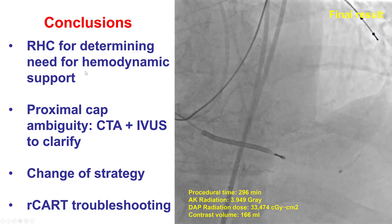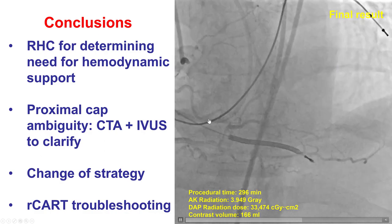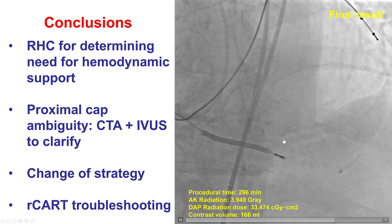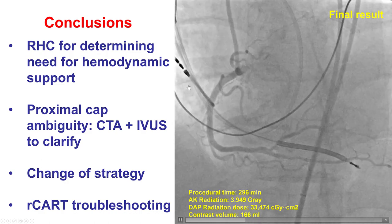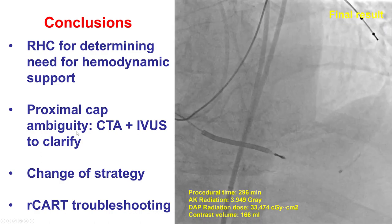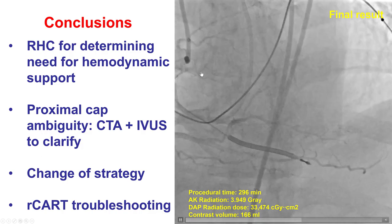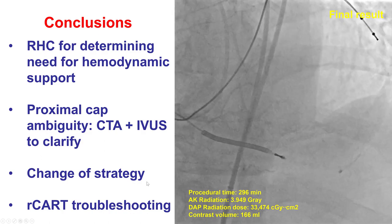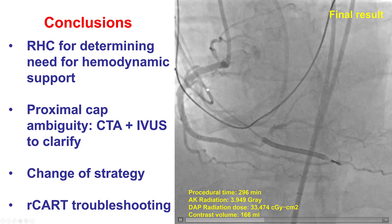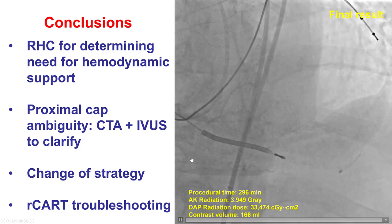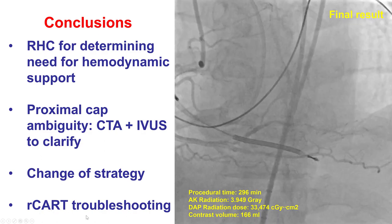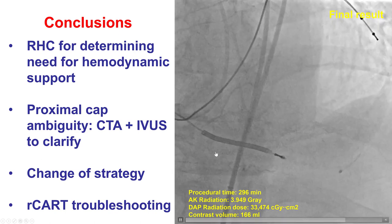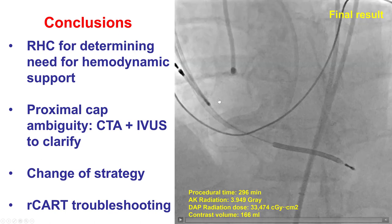Several lessons from this case: First, the importance of right heart catheterization for determining the need for hemodynamic support — despite a low ejection fraction of 35% and retrograde approach through LAD and septal collaterals, normal baseline hemodynamics meant no support was needed. Second, both CT coregistration and IVUS can clarify proximal CAP ambiguity. Third, changing strategy from antegrade to retrograde enabled success. Fourth, options for troubleshooting reverse CART include larger balloons, guide extensions, different retrograde guide wires, and changing the re-entry zone.